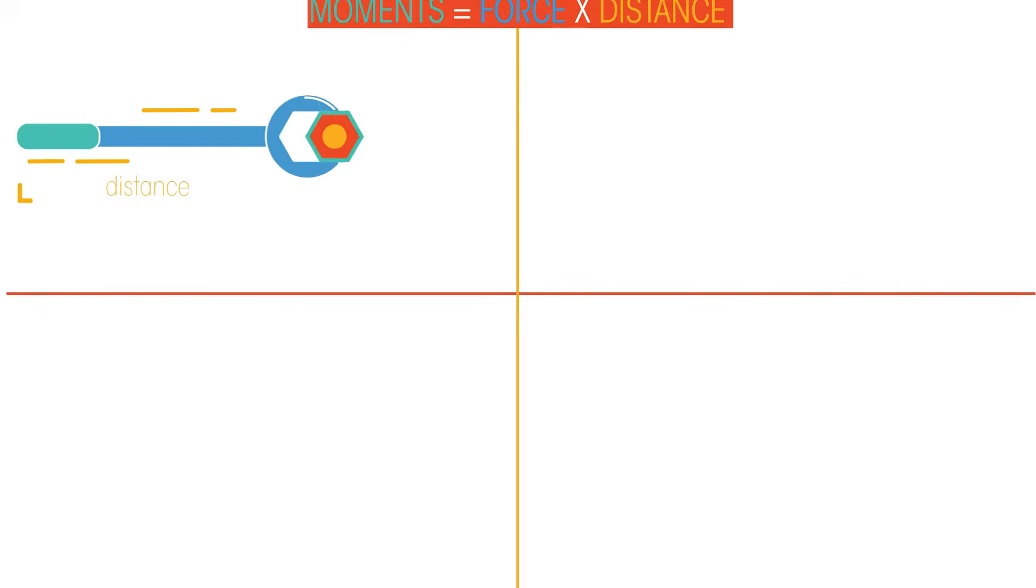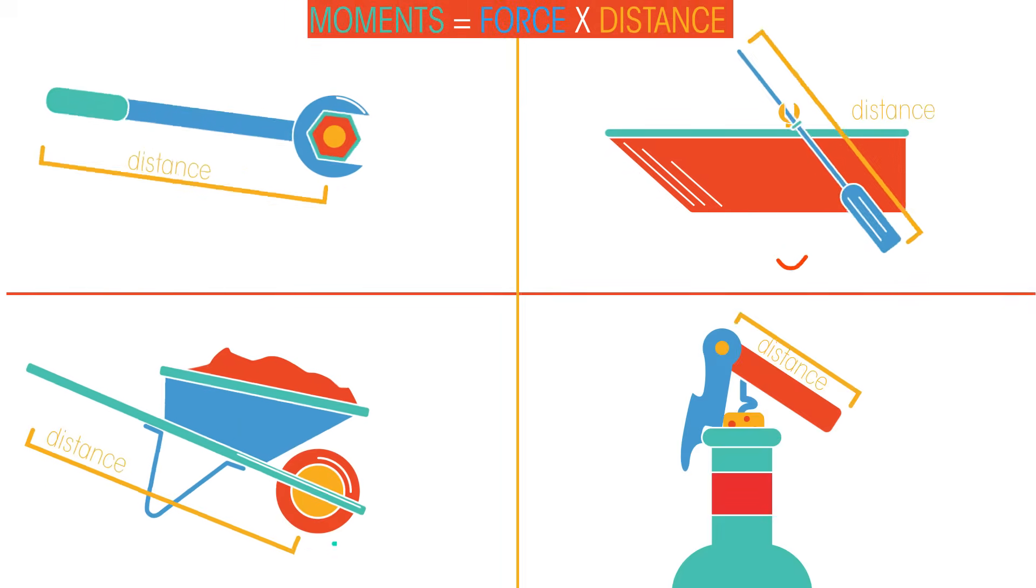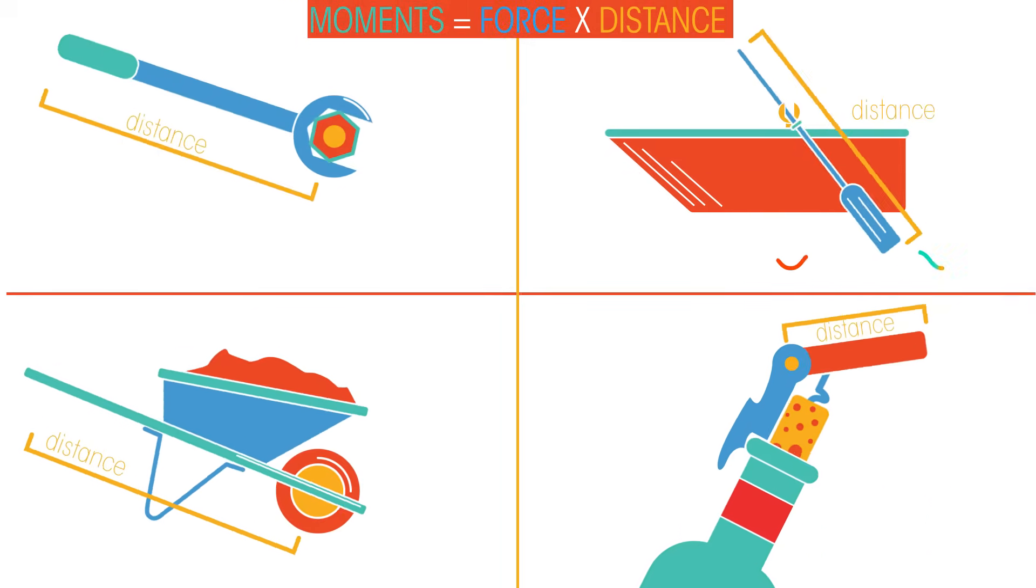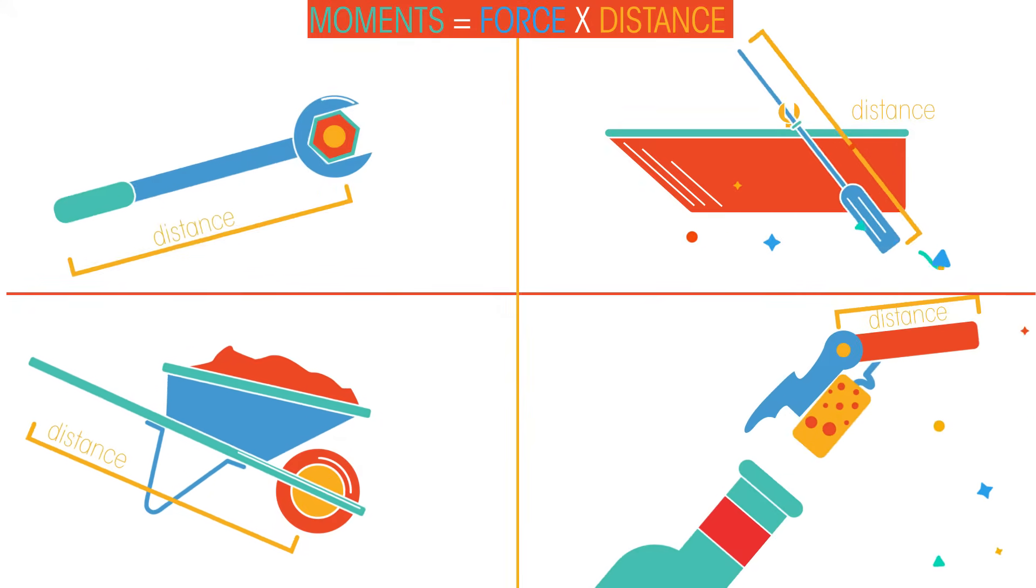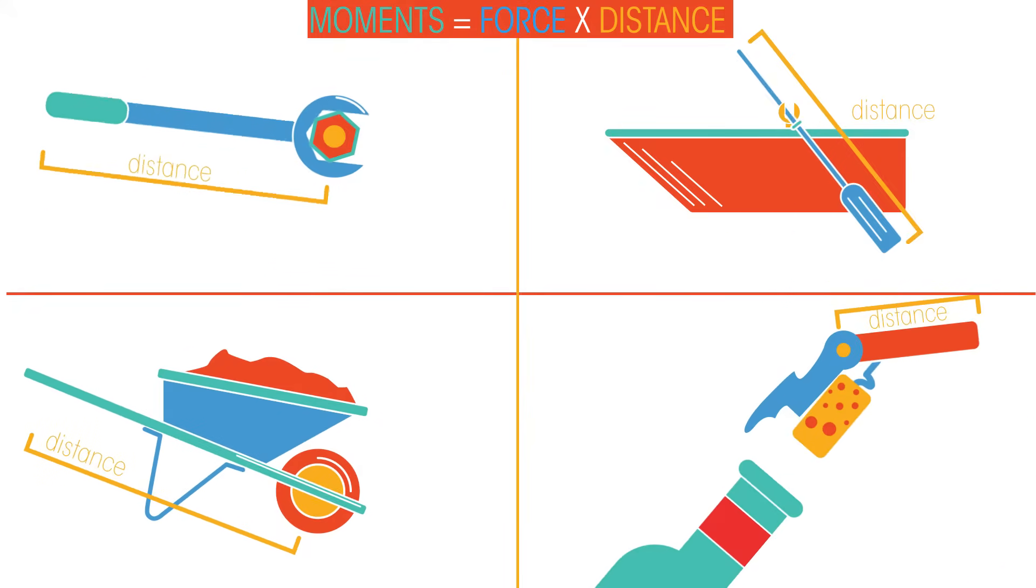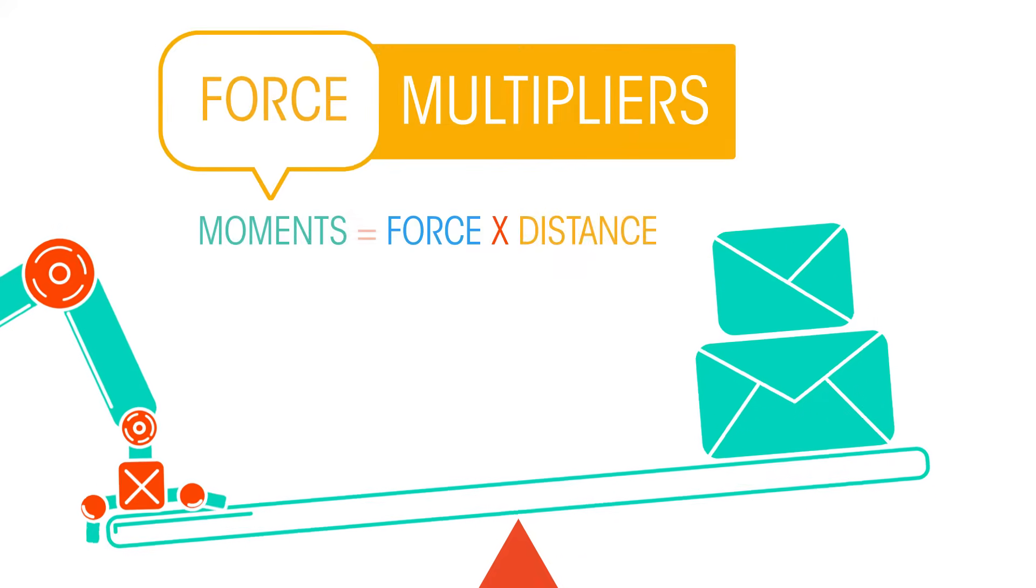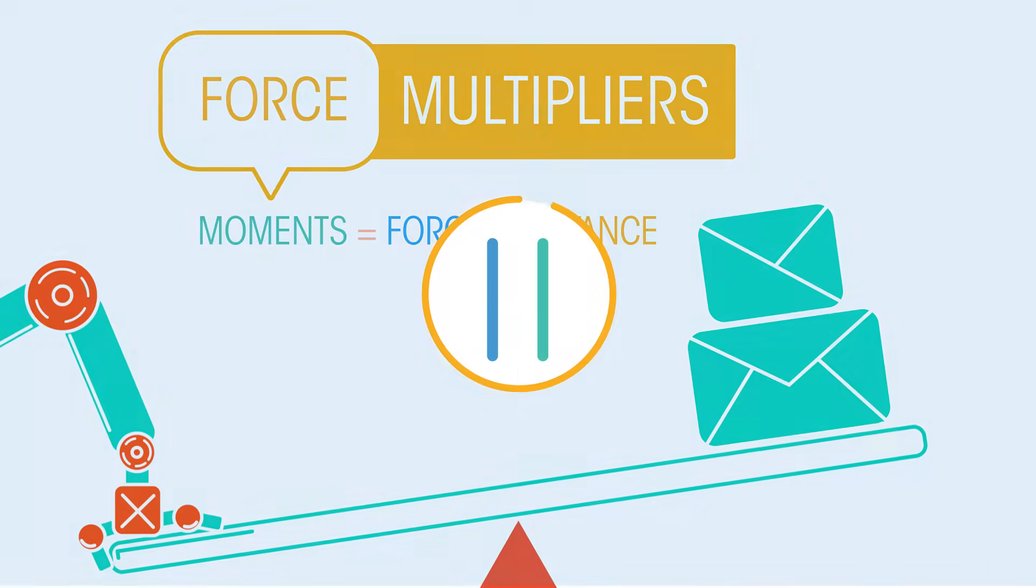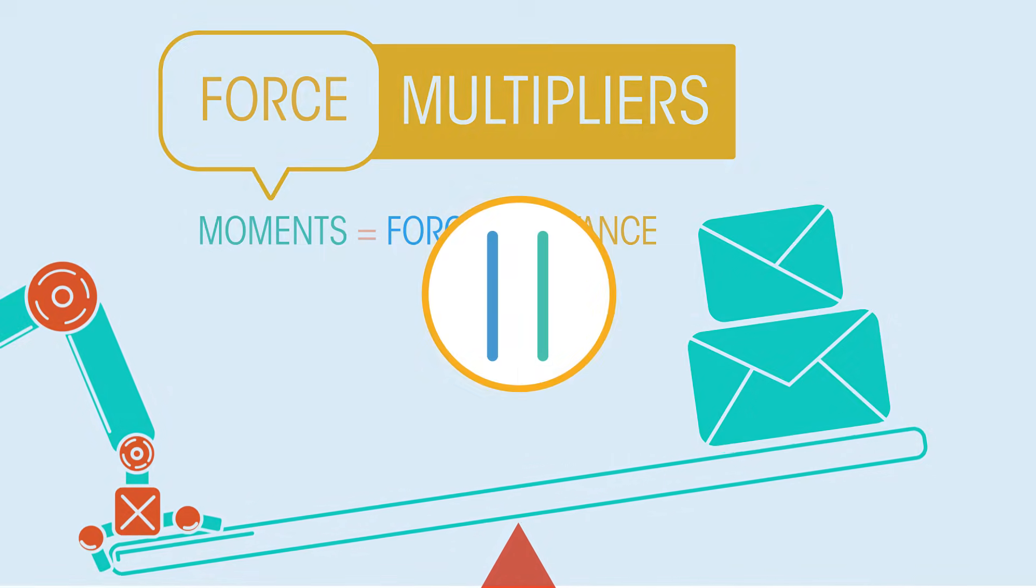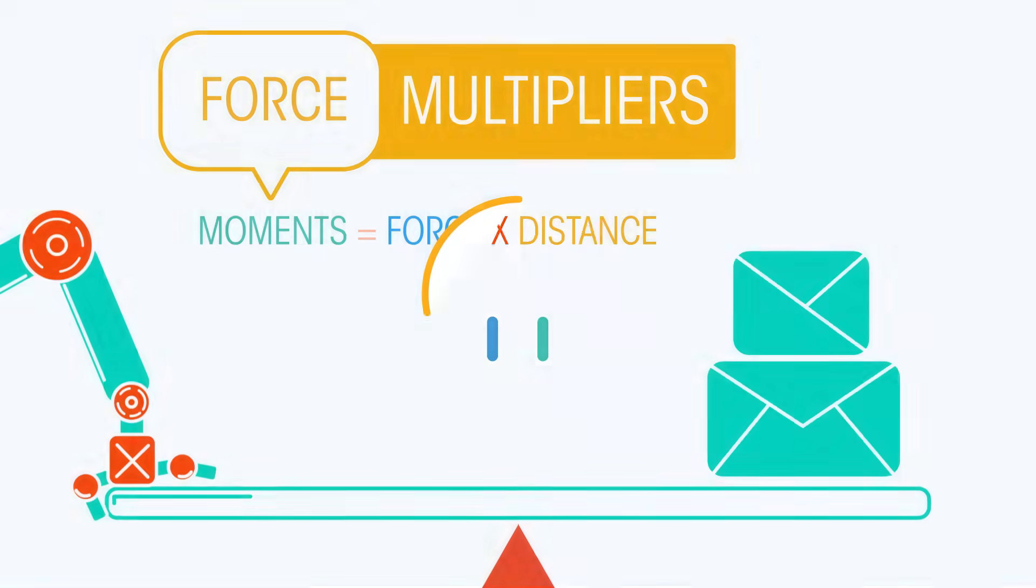Levers are simple machines or mechanisms that make work easier to do. They use moments to reduce the force needed to perform a task. Levers are sometimes called force multipliers. Pause the video to discuss why you think they are called this. Levers increase the size of the moment of a force.